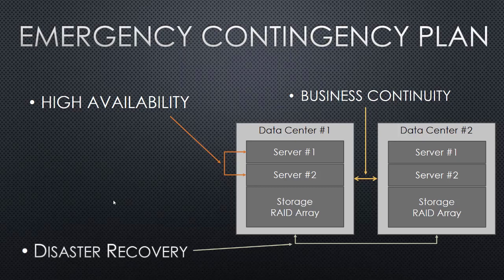Next we have business continuity. In this case we have the yellow arrow showing the replication between data center one and data center two. Data center one and data center two are copies of each other. If data center one were to have a fire and everything there is destroyed, we have our network pointed at both data centers so that data center two can be activated as the primary site. The end users at the hospital don't know that there was any disruption in data center one because data center two is a full redundant copy.